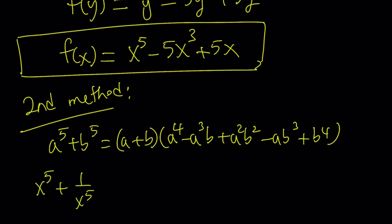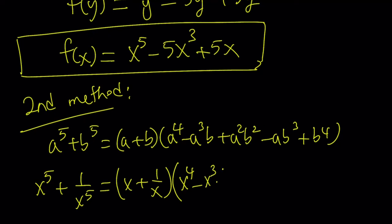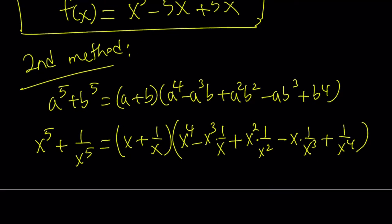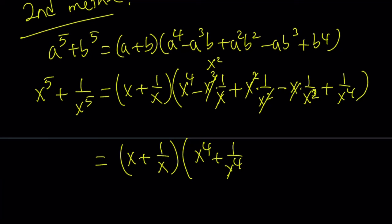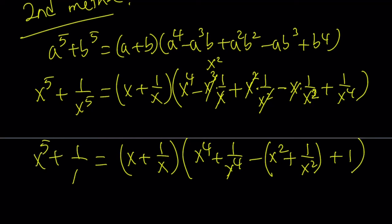Now let's apply this with x to the 5th plus 1 over x to the 5th: a is x, b is 1 over x. So we get x plus 1 over x from the first factor. From the second part we get x to the 4th minus x squared plus x squared minus 1 over x squared plus 1 over x to the 4th, which simplifies to x to the 4th plus 1 over x to the 4th minus x squared plus 1 over x squared plus 1.